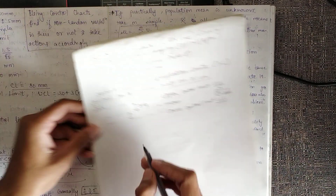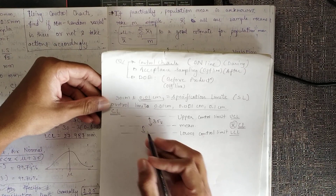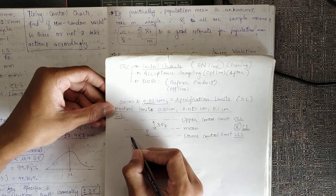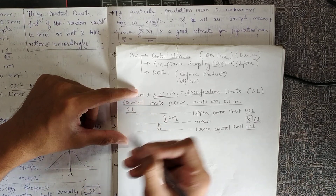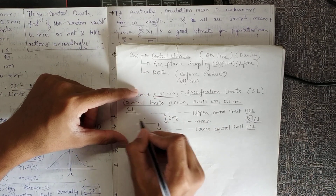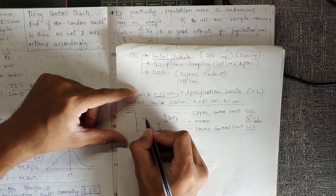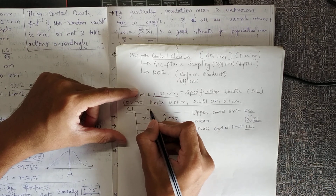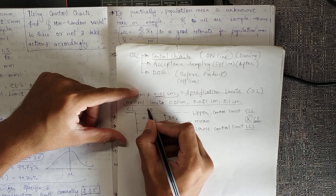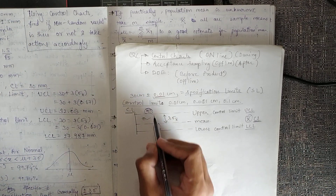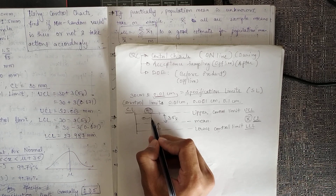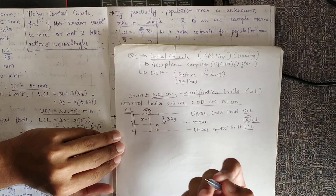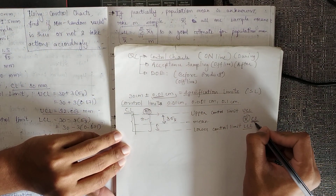Once we have the upper control limit and lower control limit specified for our process, we plot the dimensions of each product. If a point plots between the control limits, it is acceptable. If it plots outside the control limits, we need to stop manufacturing, make some changes in our process, so that the next items fall inside our control limits.